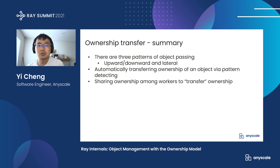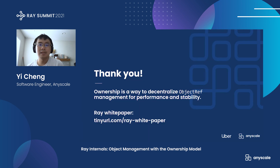Here is a quick lookup. We went through the three patterns of object passing and discussed why we need ownership transfer. We went through one design: we will transfer the ownership automatically via pattern detection, and share the ownership among all the workers which are using the object. Since this is an ongoing project, we are looking for feedback. That concludes our talk on ownership. Please check out our white paper for more information about the ownership model and how it relates to other problems such as memory management. Thank you, and we are happy to take any questions.